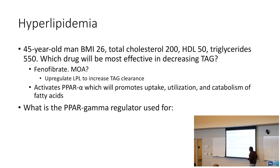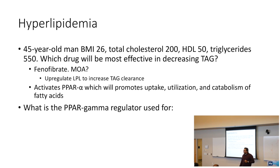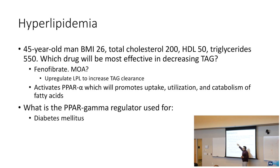Now, in your USMLE study, there's going to be another agent — a PPAR-gamma regulator. That PPAR-gamma regulator is going to be used for diabetes. So PPAR-alpha is a fibrate, that's for lipid stuff. PPAR-gamma is going to be for diabetes.